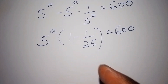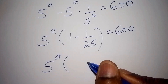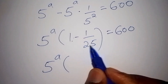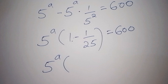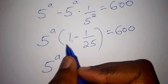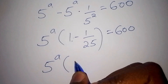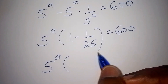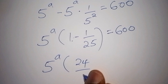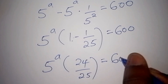The next step: we shall have 5 to the power of a, into bracket, so 1 minus 1 over 25. Since 1 represents 25 over 25, it's like having 25 over 25 minus 1 over 25, so the result in the bracket is 24 over 25. So 5^a times 24 over 25 equals 600.